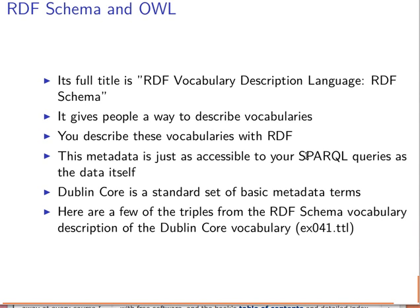RDF Schema is usually metadata, and this metadata is accessible using SPARQL, just as we can access RDF data in Turtle format and other formats. A very famous example is Dublin Core — a standard set of basic metadata terms. You may have seen it in one of the Turtle files provided by the book, where we use the 'DC' prefix for Dublin Core. In it, we find metadata terms we can use to describe our own vocabularies.